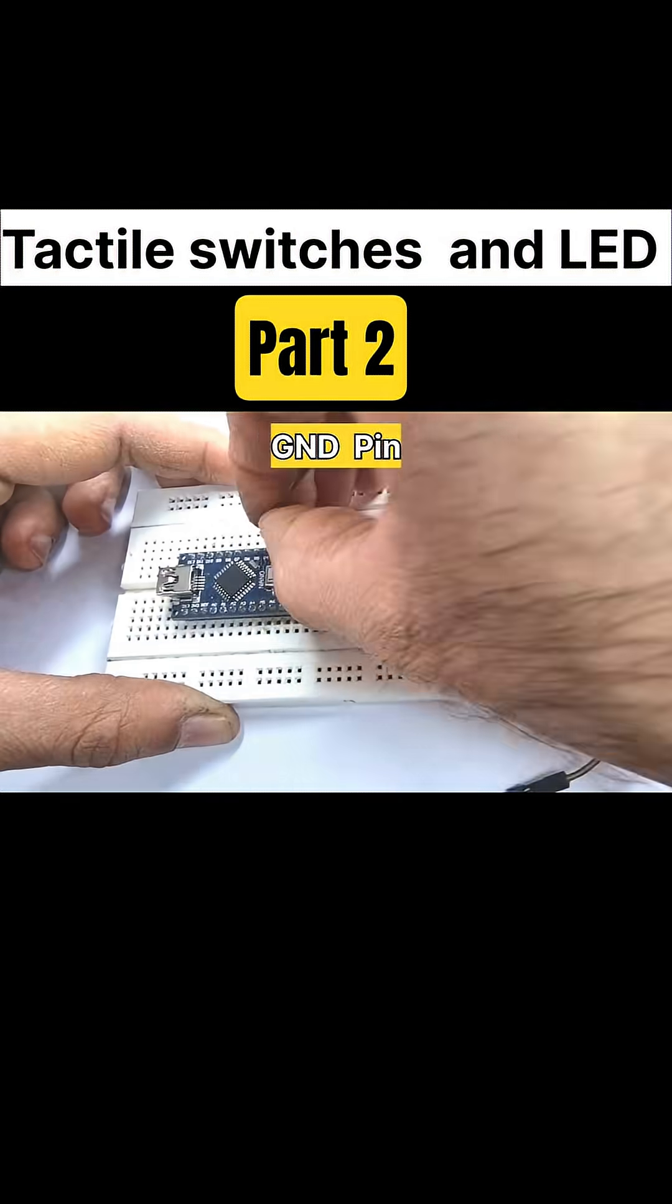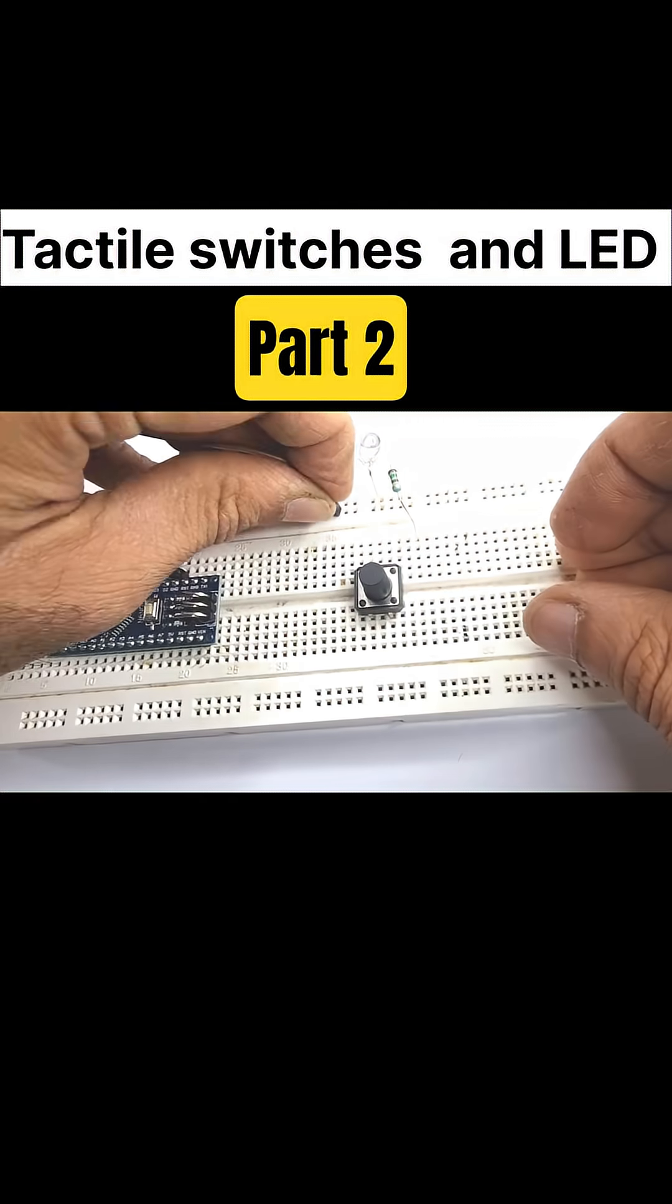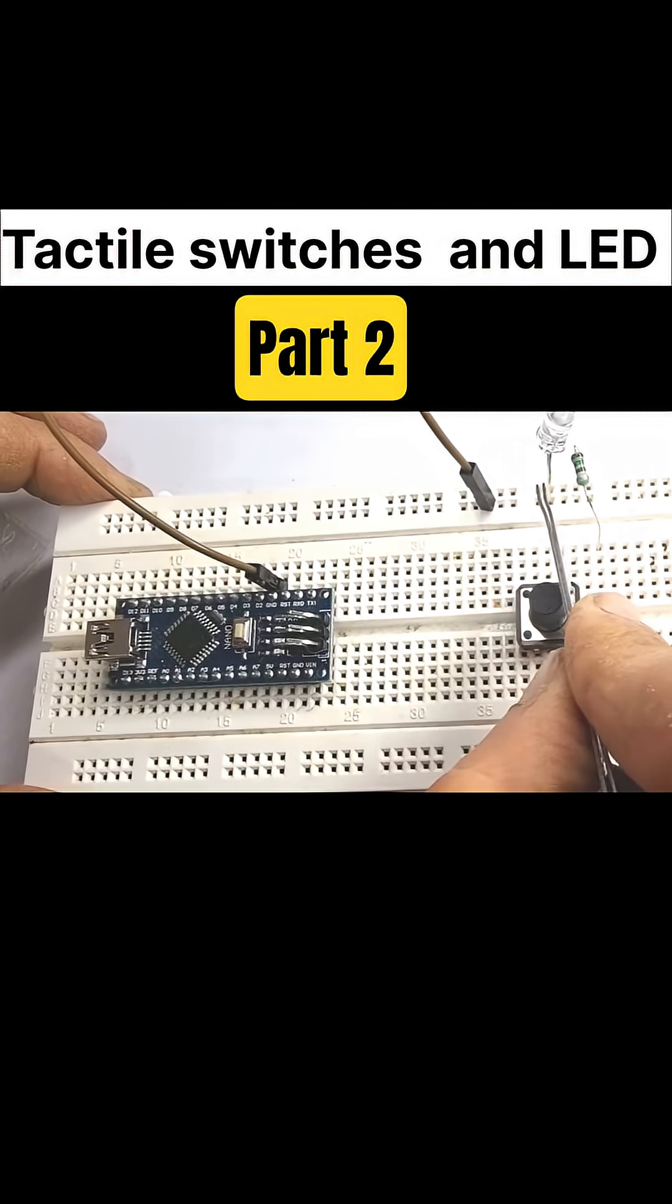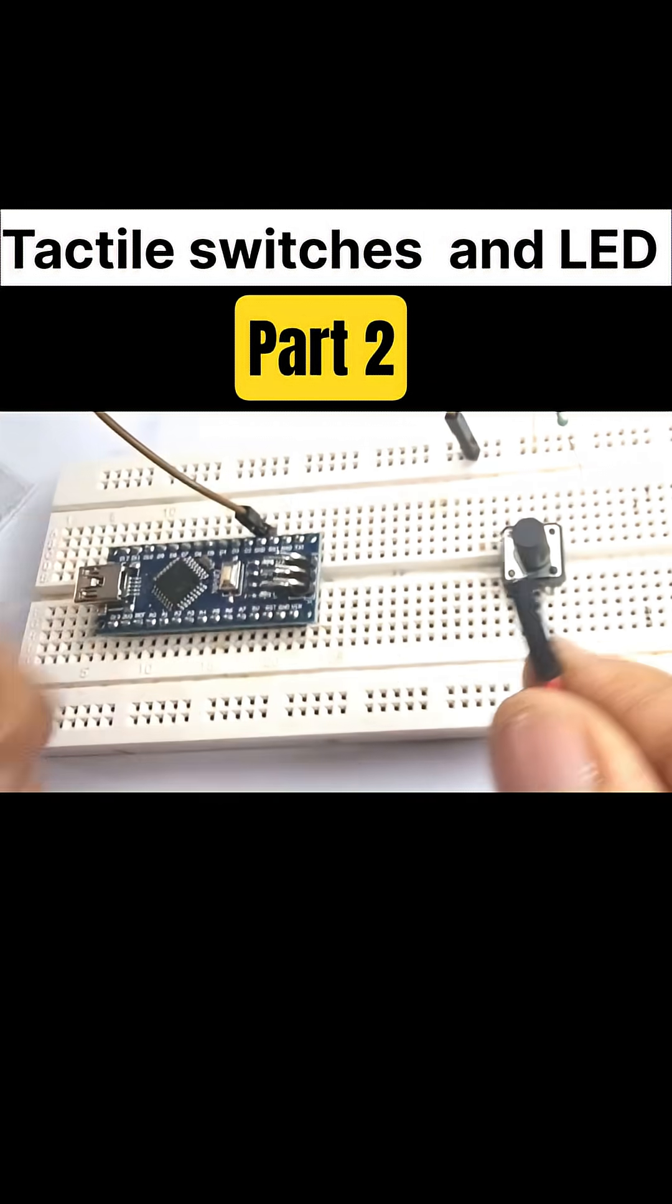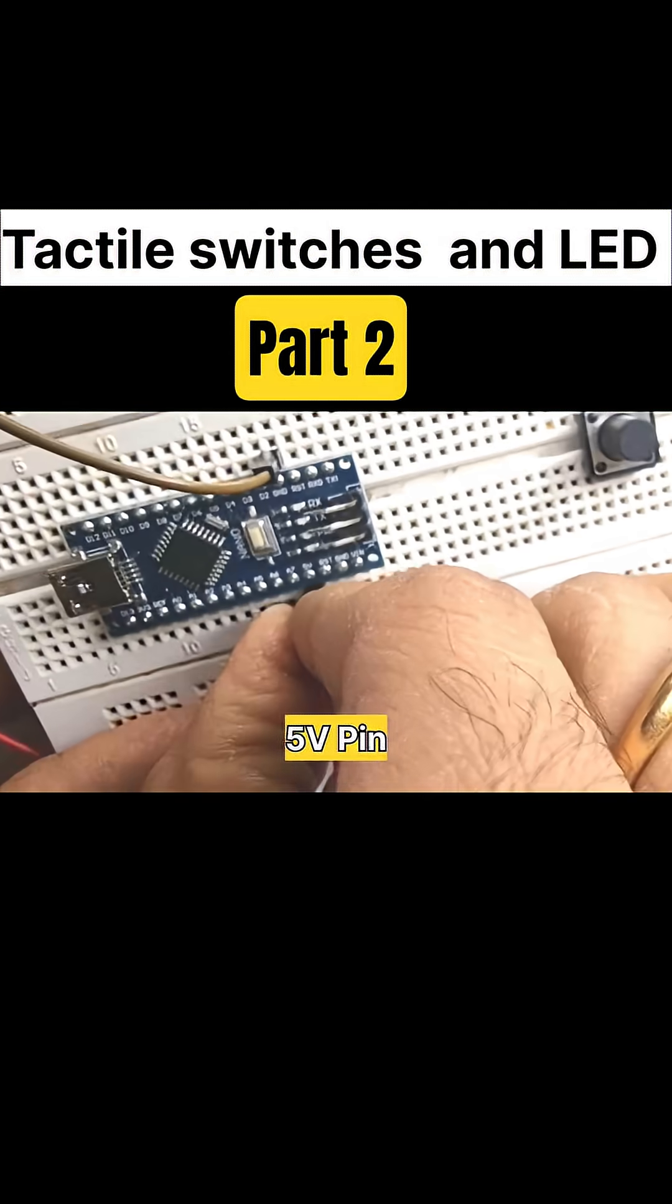Connecting the GND pin of the Arduino Nano to the ground line of the breadboard. Then I take another jumper wire and connect 5 volts from the Arduino Nano's 5V pin to pin number 2 of the tactile switch.